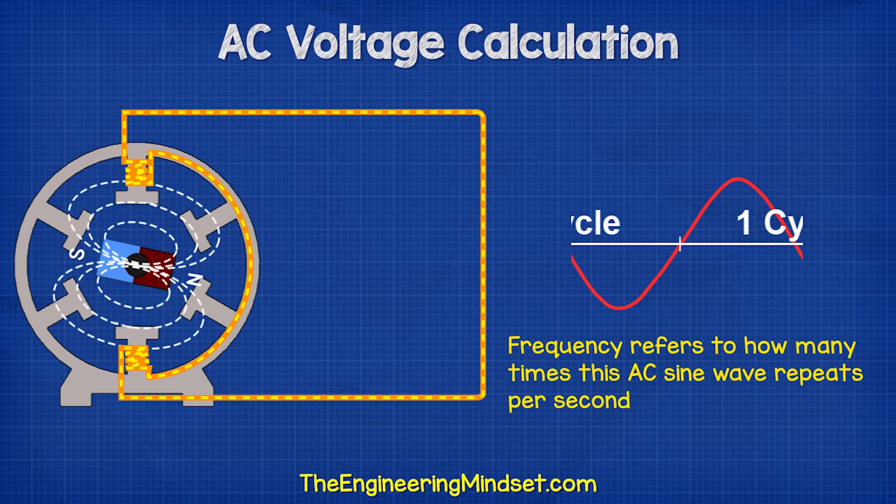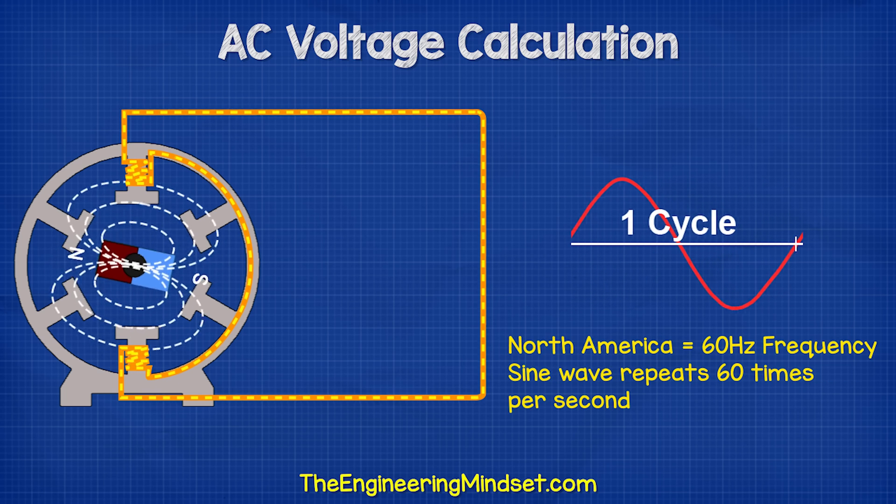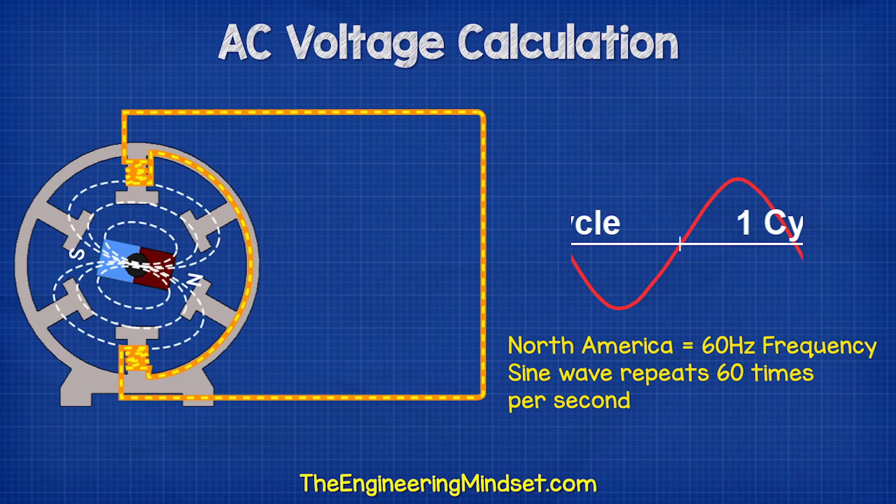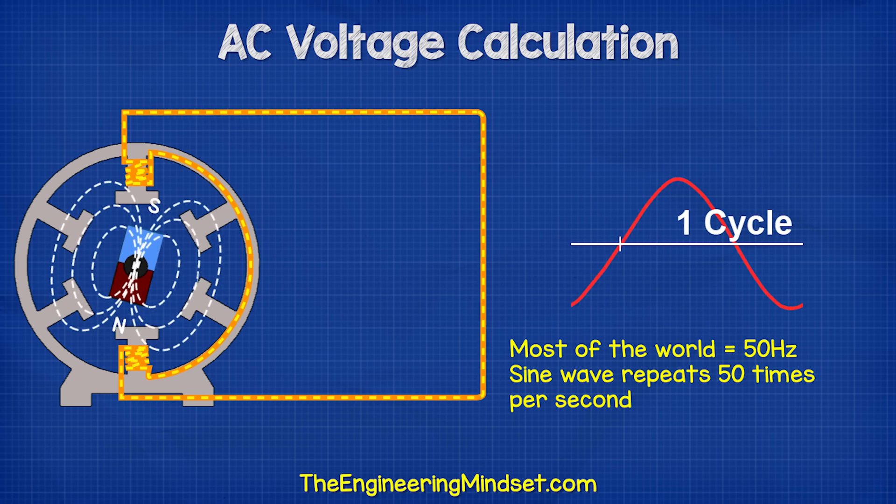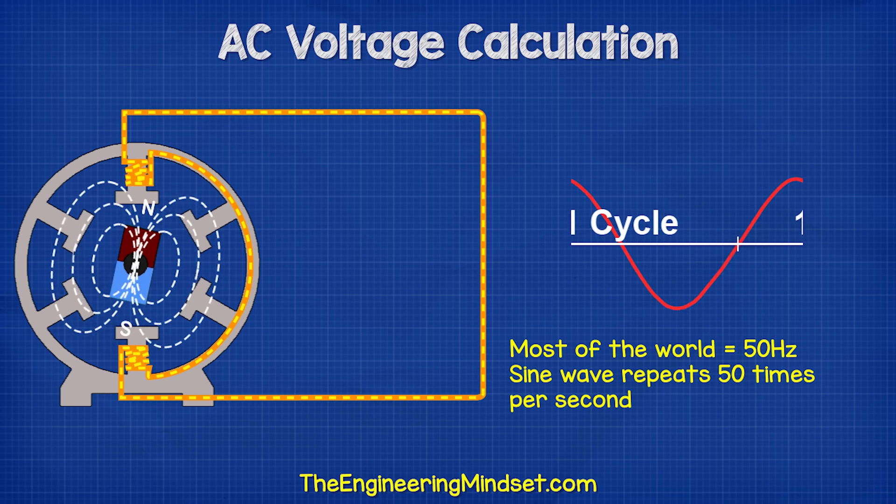The frequency is measured in hertz, but this just means the sine wave is repeating 60 times per second in the North American electrical systems and 50 times per second in the rest of the world.